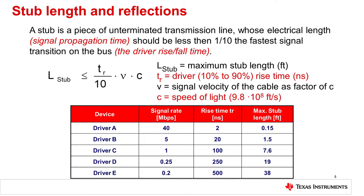TR is the RS-485 driver's rise time, found in the datasheet of the device, measured from 10% of VCC to 90% of VCC. V is the signal velocity, which is a function of the dielectric material of the transmission medium or cable; this information can typically be found in the datasheet of the transmission cable and is expressed as a percentage factor of the speed of light. C is the constant for the speed of light.